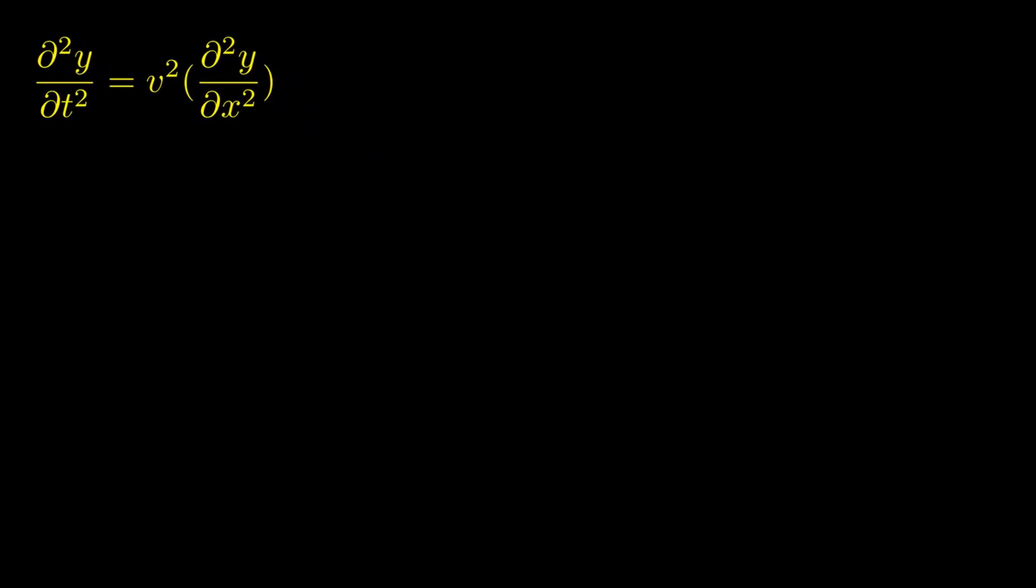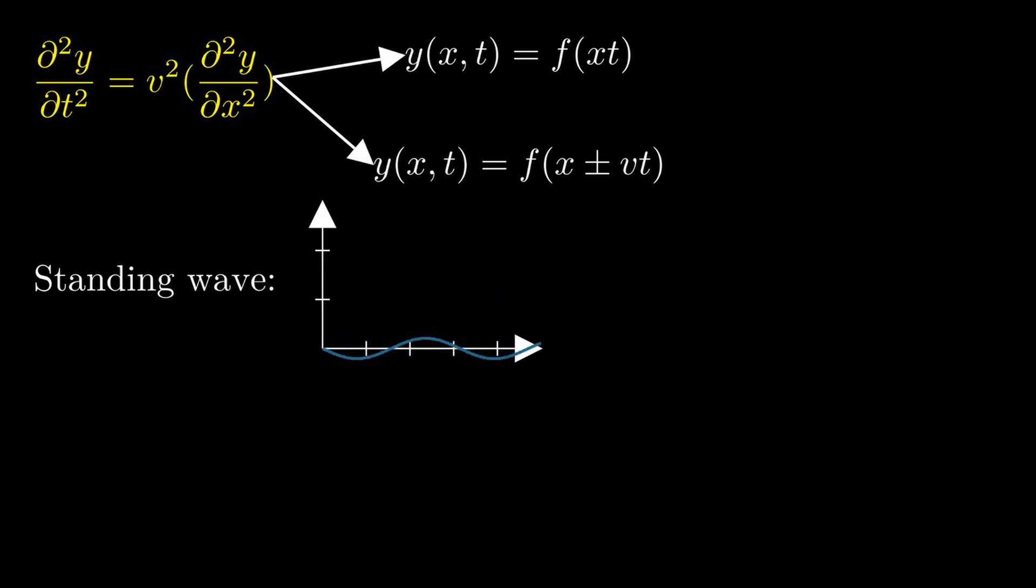As we have seen, the wave equation is a second-order partial derivative equation, which means it has two solutions. A standing wave is represented by the first, a traveling wave is the second.